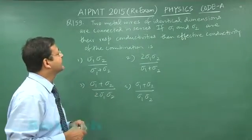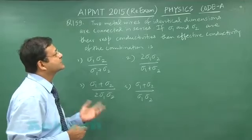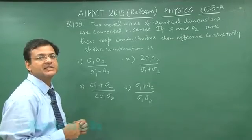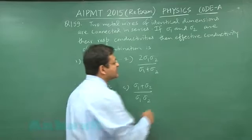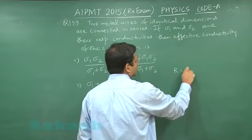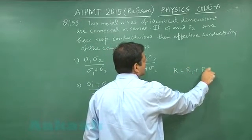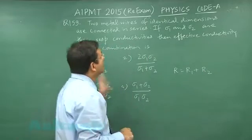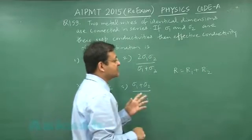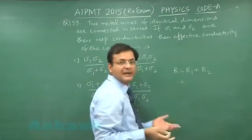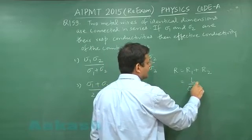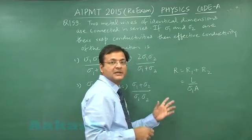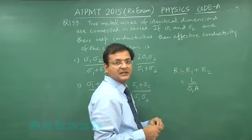In the next question, this is 159. You have been given 2 wires of identical dimensions they have been connected in series. So as you know that in series their resistance will be following this equation R is equal to R1 plus R2 and if you talk about resistance you have to write rho L by A. So here you can write as L by sigma 1 A because their dimensions have been given to be equal, only difference is in conductivity.